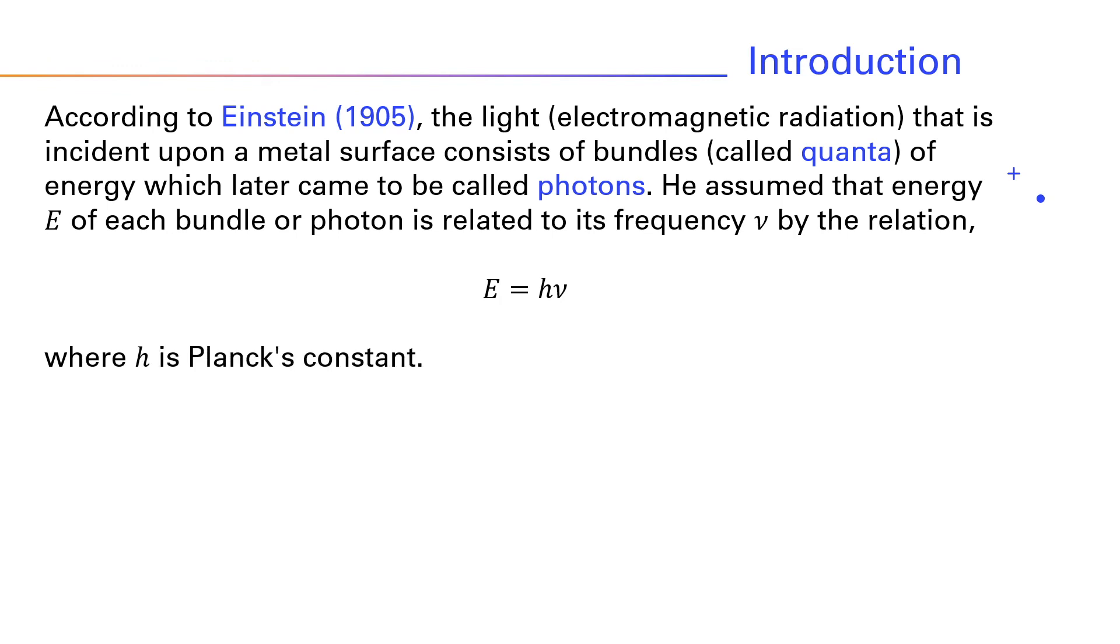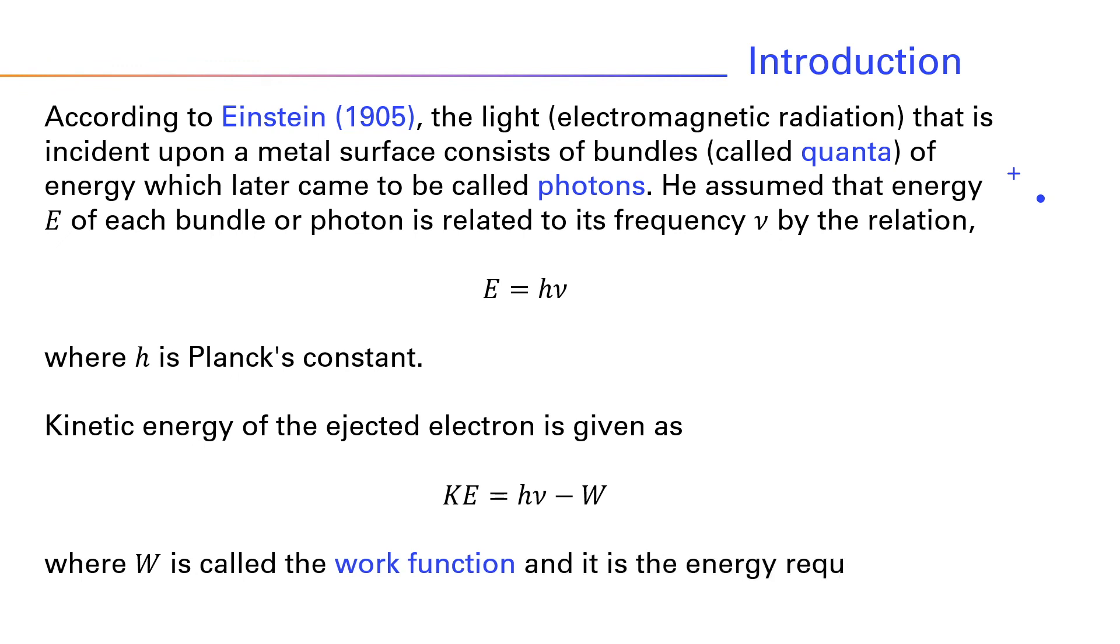When such a photon is incident on the surface, all its energy is absorbed by the surface. Part of the energy is used to eject the electron, and the remaining is given as kinetic energy to the electron. Kinetic energy of the ejected electron is given as KE = hν - W, where W is called the work function, and it is the energy required to remove the electron from the metal surface.